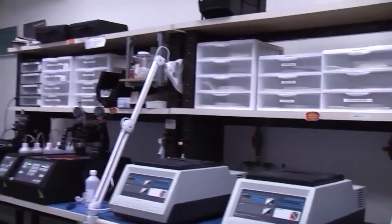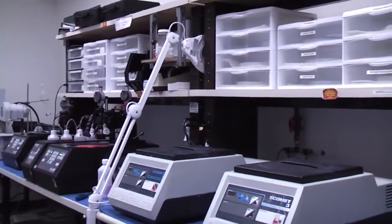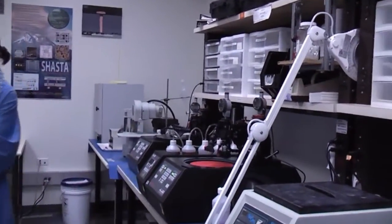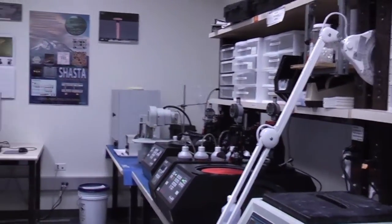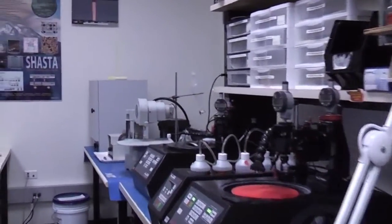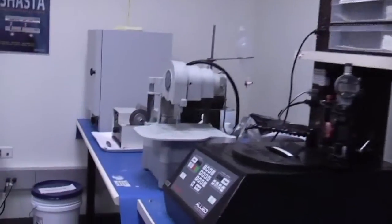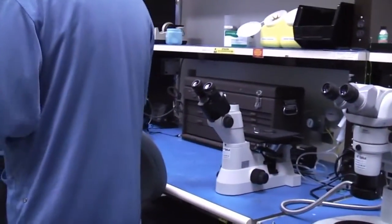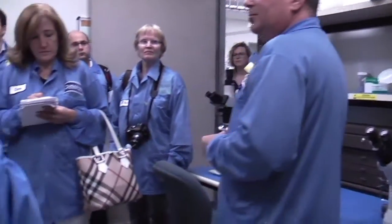Part of the failure analysis lab we call the mechanical room. We'll do all of our mechanical de-processing of the part. Physically de-process, de-layer the part by grinding or cross-sectioning so that we get to the location on the die or in the package that caused the failure and will identify that failure mechanism.